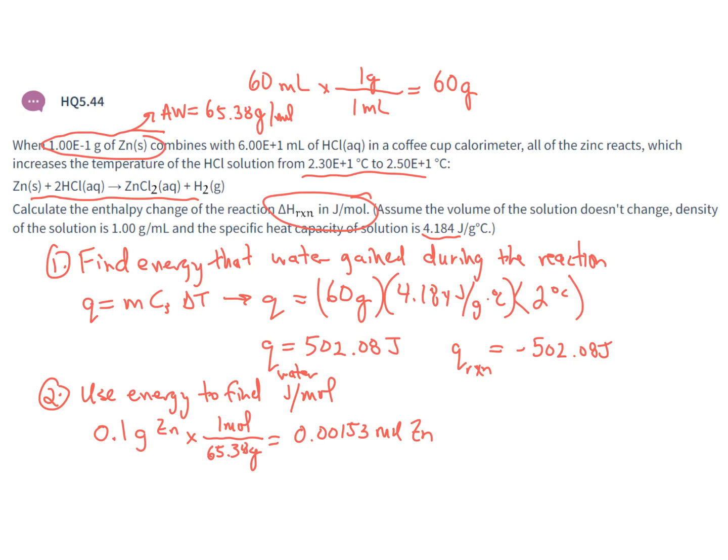Just taking a look at the units, I need joules per mole. Well, here I have joules, and here I have moles. So to find the delta H of the reaction, I'm going to simply divide the energy by how many moles I have in this reaction. If I divide 502.08 joules by 0.00153 moles of zinc, I can find the delta H of the reaction to be approximately 3.28 E to the 5 joules per mole.